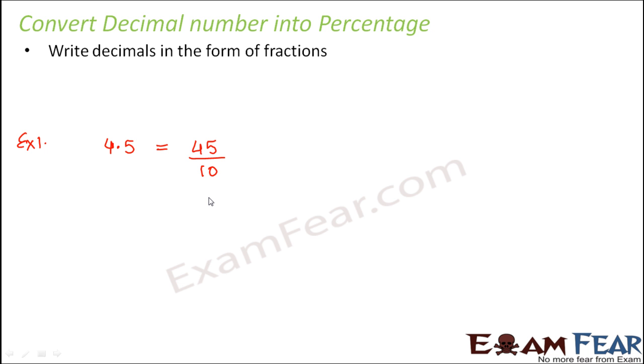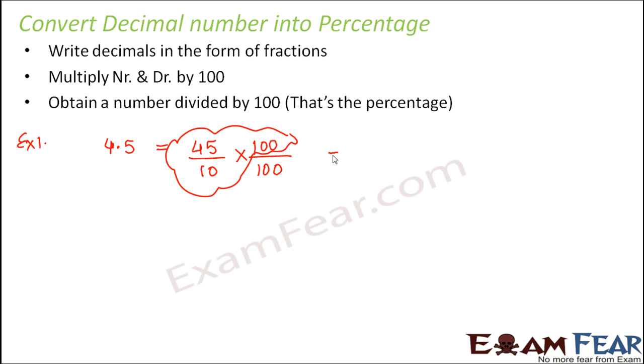So now you have a fraction. How do you convert the fraction into percentage? You multiply the numerator and the denominator by 100. So consider this entire part together. So what happens? You obtain a number which is divided by 100.